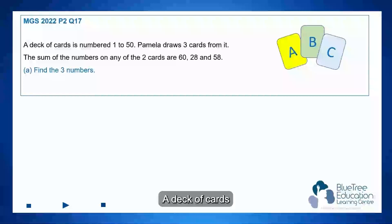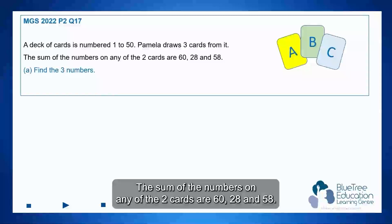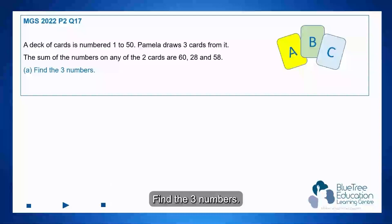The deck of cards is numbered 1 to 50. Pamela draws three cards from it. The sum of the numbers on any of the two cards are 60, 28 and 58. Find the three numbers.